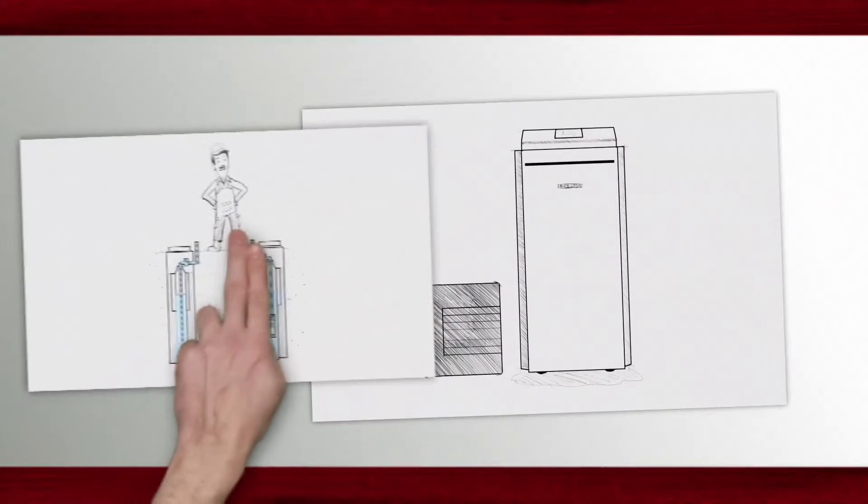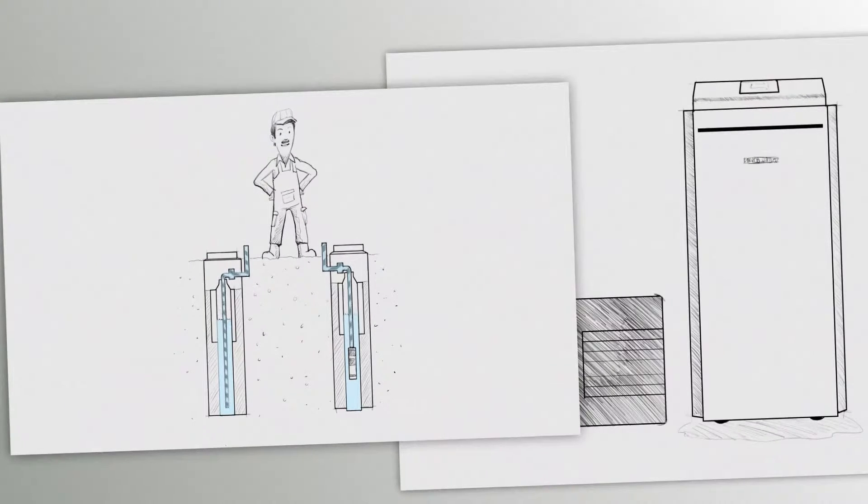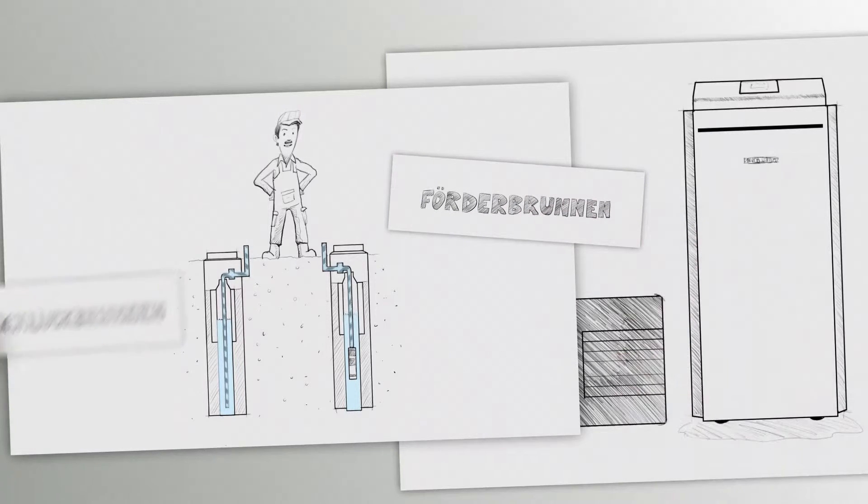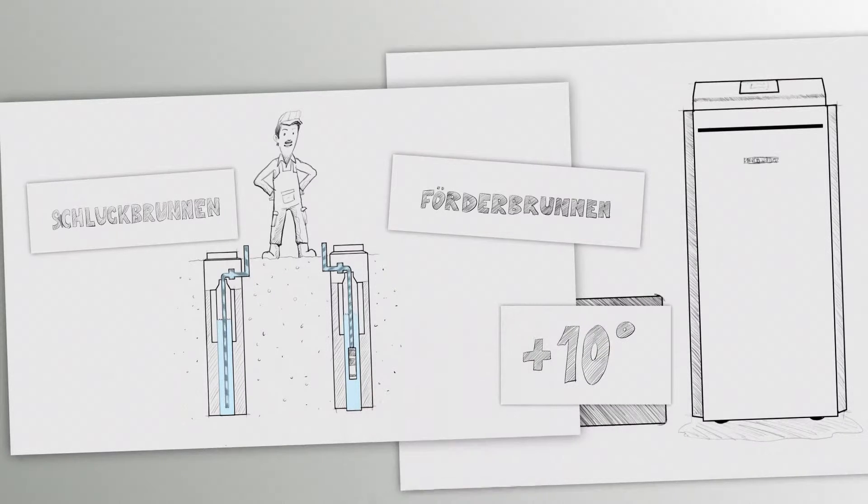The ground source heat pump uses the groundwater as an energy source. A great advantage of this system is that our groundwater has almost always the same temperature all year round. On average it is plus 10 degrees.